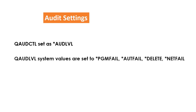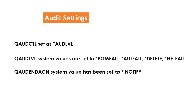*PGMFAIL refers to when a program fails. *AUTFAIL is authentication failure. *DELETE is when any object is deleted. *NETFAIL is when network-related issues occur. The QAUDENDACN system value is set when auditing fails to write entries to the journal. In this case, the value set for QAUDENDACN should be *NOTIFY, which will notify relevant users of the inability to log audit entries.